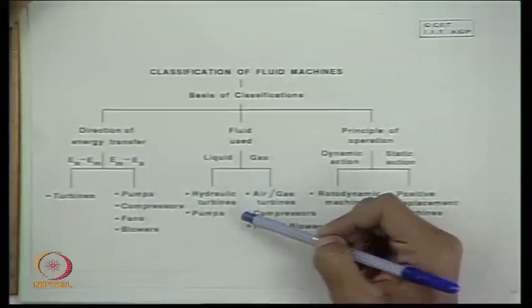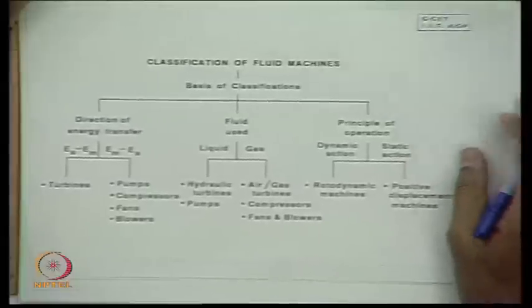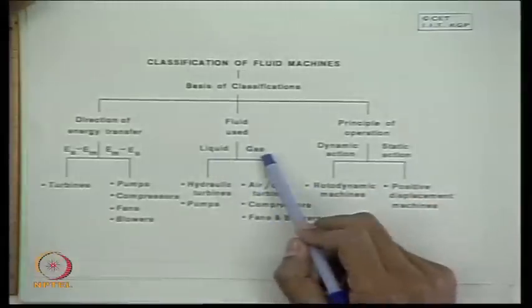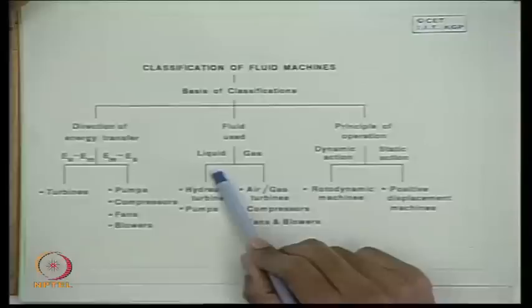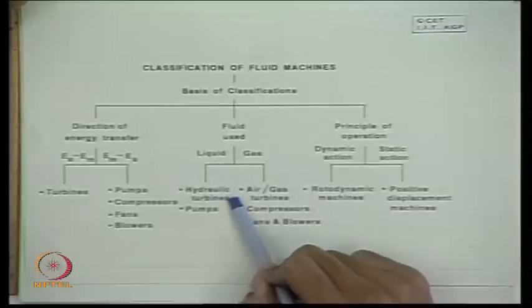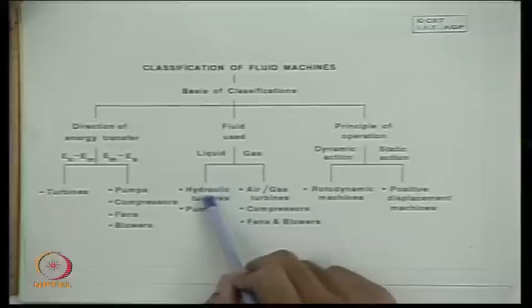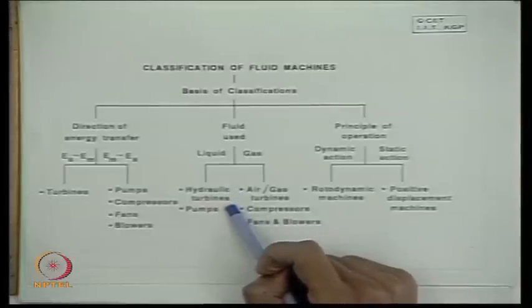Based on the fluid used, fluid machines are classified into different forms. Fluid comprises both liquid and gas — incompressible fluid and compressible fluid. When a machine converts stored energy to mechanical energy and uses liquid as the fluid, these are termed hydraulic turbines. The adjective hydraulic is used because the liquid is usually water. Sometimes they are called water turbines. Hydraulic is the more general terminology used as an adjective.